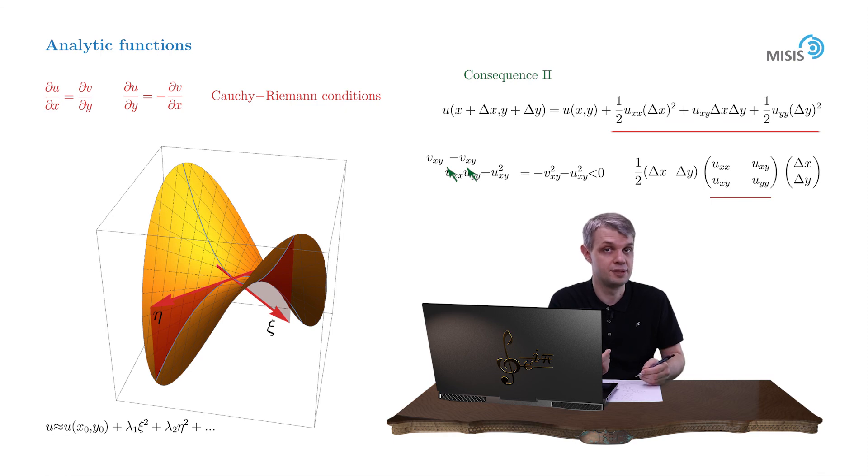Of course, using the same arguments, you may prove the same property for its imaginary part. This simple fact that the real and imaginary parts of a function of a complex variable can't have minima or maxima, but just saddles, has tremendous importance in complex analysis. In fact, it gives a name for a significant part of asymptotic analysis called saddle point approximations, and it's all a consequence of differentiability of the function.